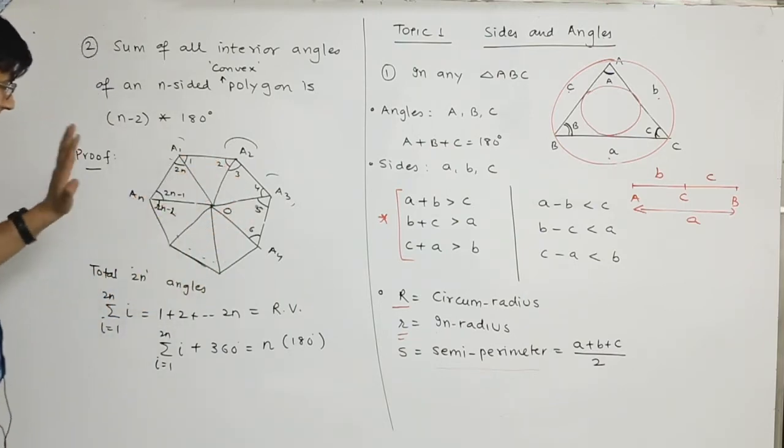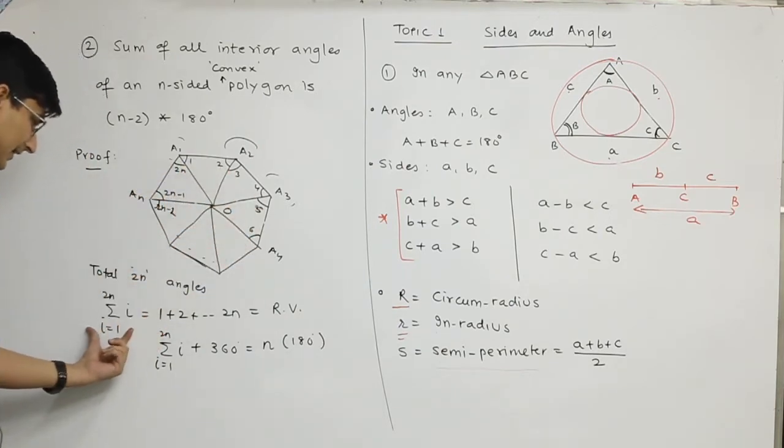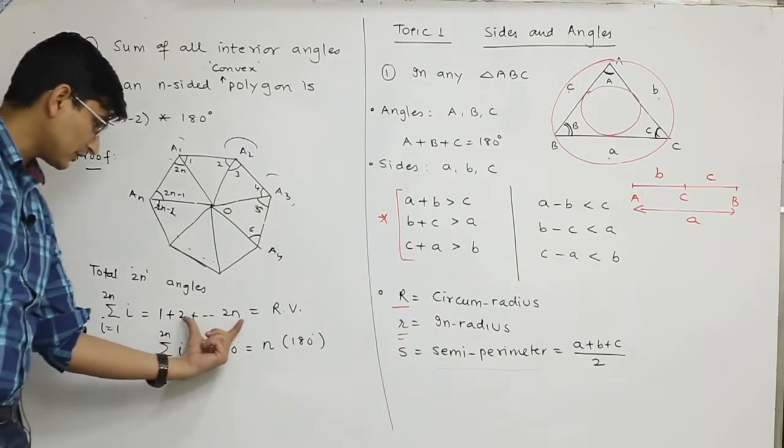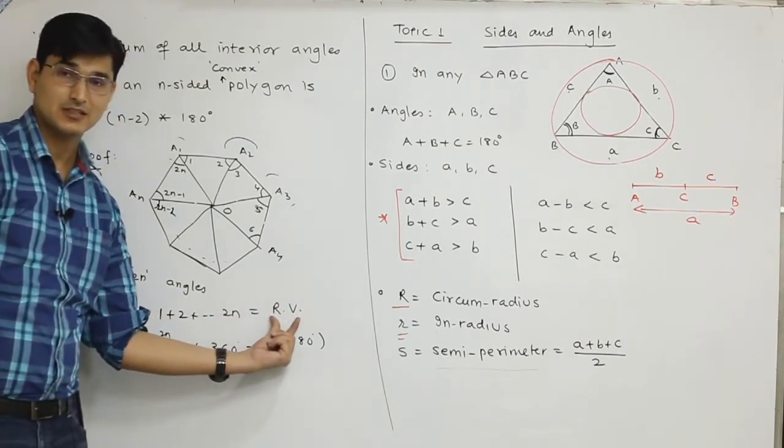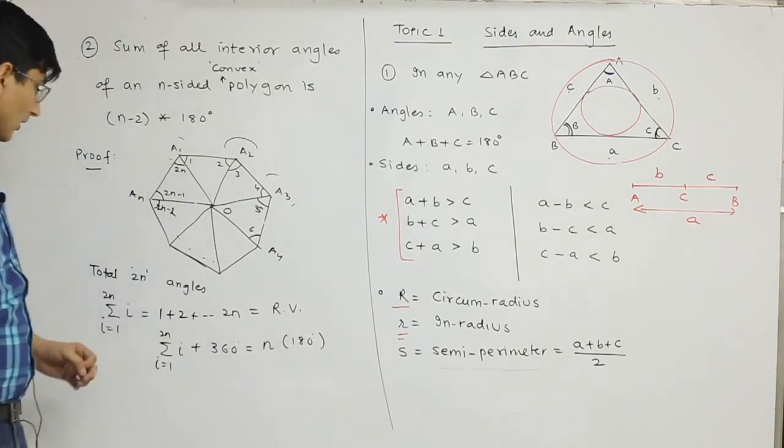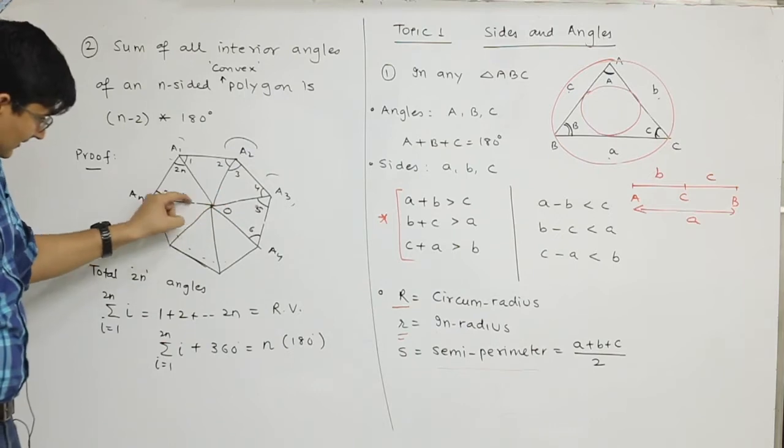We have to find angles 1, 2, 3 up to 2n. We have to find the sum of these angles. This is the required value. If you sum all these triangles, you can see that the angle at the center is 360 degrees, the complete angle around a point.